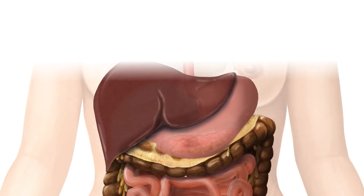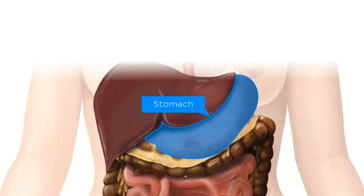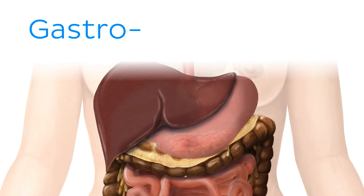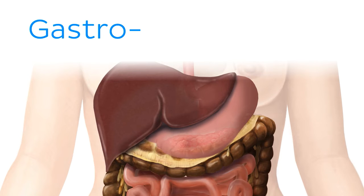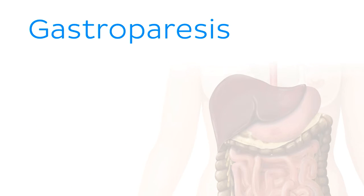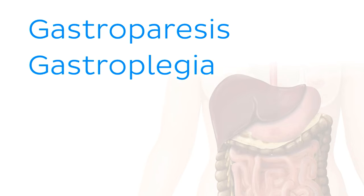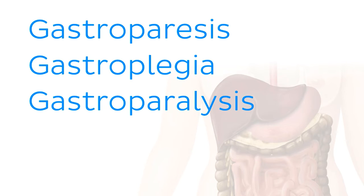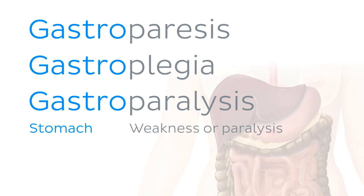Moving along the digestive tract, we know that our next major organ of interest is, of course, the stomach. Terminology related to the stomach most often centers around the root word 'gastro', which comes from the Greek 'gaster', meaning belly. For example, we have gastroparesis, gastroplegia, or gastroparalysis, all of which refer to weakness or paralysis of the muscular coat of the stomach.